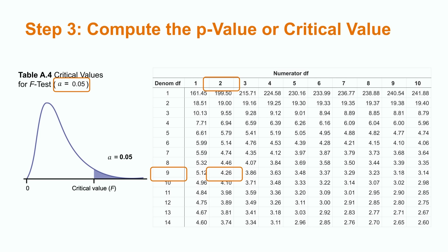The next step in our hypothesis testing procedure is to find the p-value or the critical value. Although the p-value and the critical value are given to us on our Excel output, we can also use an F-table of critical values to find the critical values.